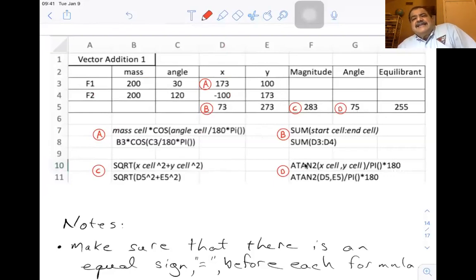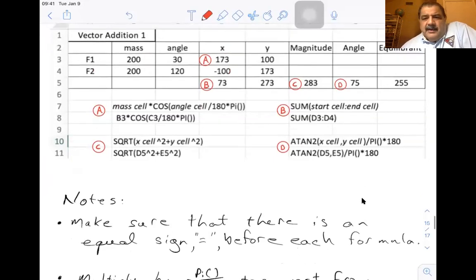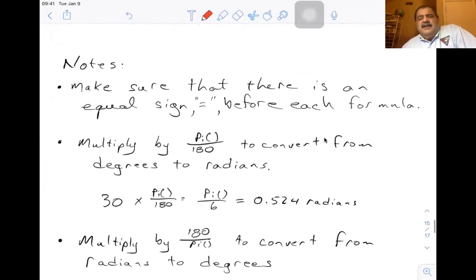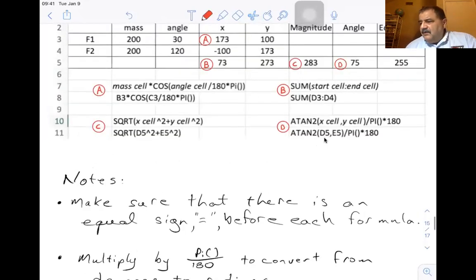And how do I get the angle? I use ATAN2, the X cell comma the Y cell. That says, this is the X value. This is the Y value. If you use ATAN2, you'll always get the correct angle. Now it's going to return the angle in radians. So you're going to divide by pi and multiply it by 180. Here's some more notes. Make sure that there's an equal sign before each formula. I couldn't do it here because if I put an equal there, it interprets the formula and you couldn't see it. So you have to put an equals before each of these formulas here, equals square root D5 squared plus E5 squared. So you need an equals.